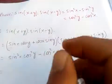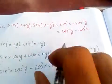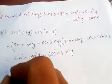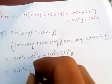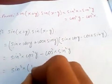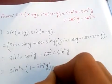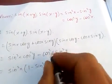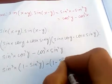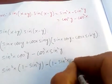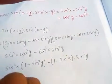And so, we want this in terms of sin. So, sin squared x — we know cos squared y is one minus sin squared y — and minus cos squared x is one minus sin squared x, times sin squared y.